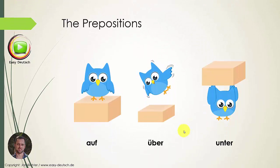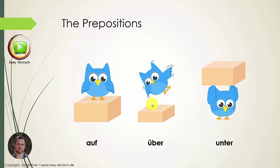The first preposition is auf, which means 'on.' Pay attention — it has to be connected, like in English: the bird is standing on the stone, so there is physical contact. Über means 'over.' The difference between auf and über is that with über there is no connection — there is at least some air between the stone and the bird.